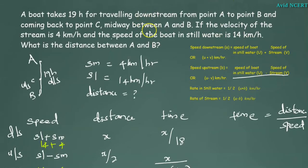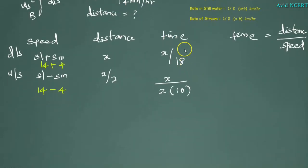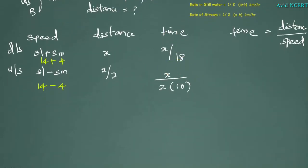From the question we know that the boat takes 19 hours for travelling downstream from point A to B and coming back to point C. The total time taken is 19 hours. So X by 18 plus X by 20 equals 19.